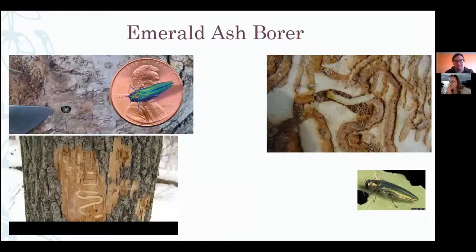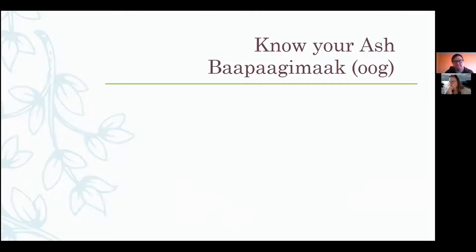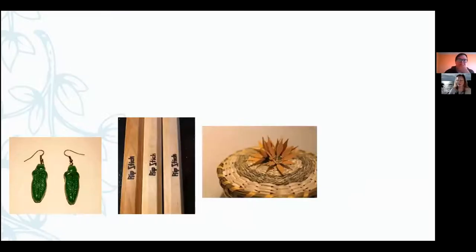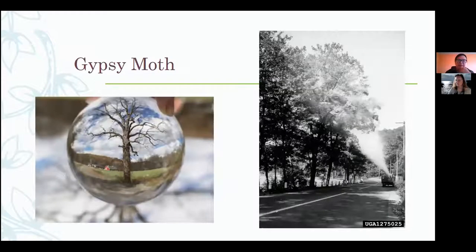Emerald ash borers — you've probably heard of that one. Bad for ash trees. Some people think it might not come quite this far north because it gets so cold, but obviously with climate change that could change rapidly. There's also a slide here on what looks like an ash basket. And the gypsy moth is another insect — I'm not too familiar with that one.